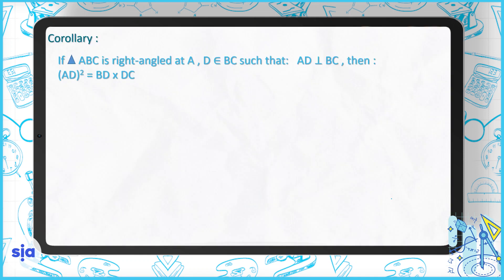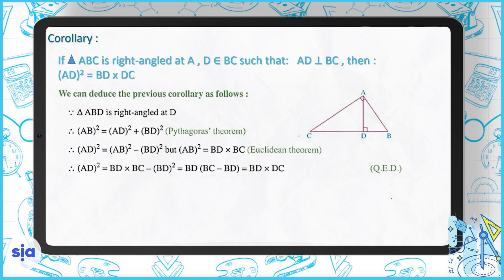Let's now see this corollary. It says: if triangle ABC is right-angled at A, and D belongs to BC such that AD is perpendicular to BC, then AD² = BD × DC.